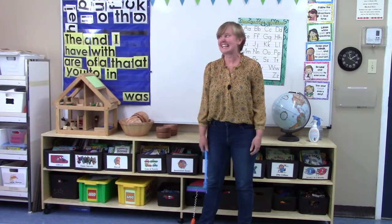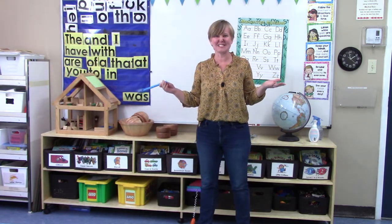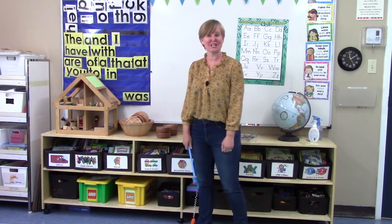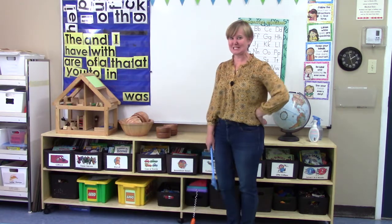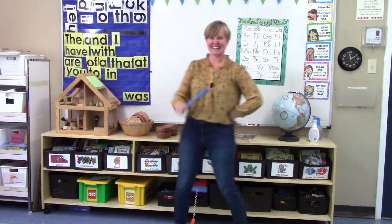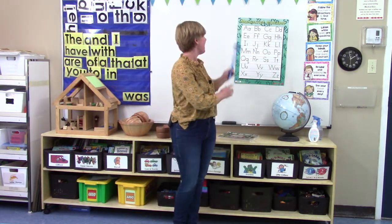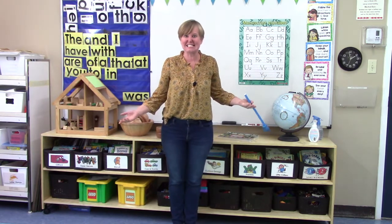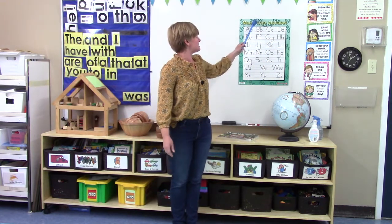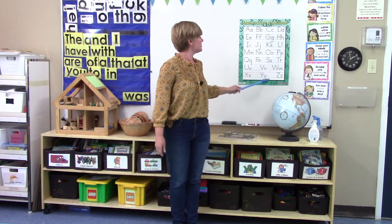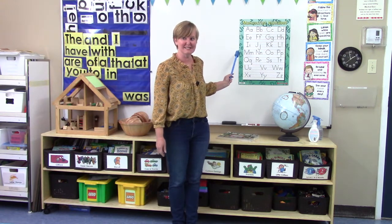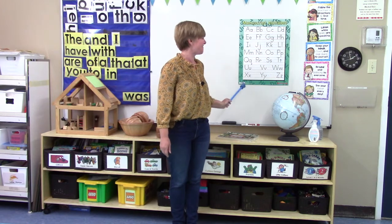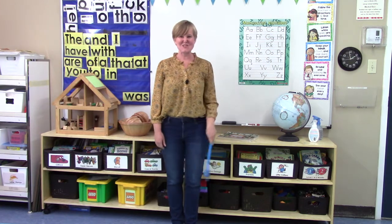Class, let's take a minute to look in our classroom and see if we can find any rectangles. Do you see any? I think there's one behind me. Our poster of the alphabet is a rectangle. It has one, two, three, four sides. And how many angles? One, two, three, four.